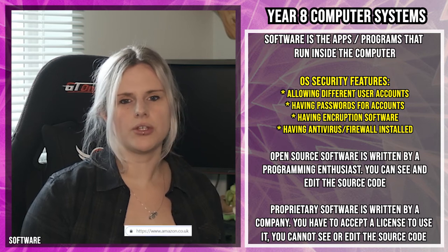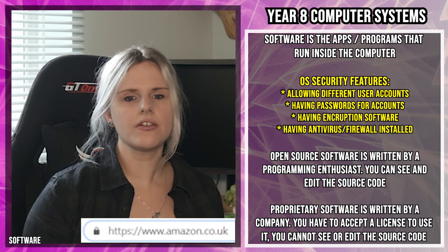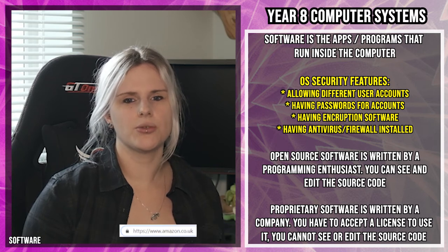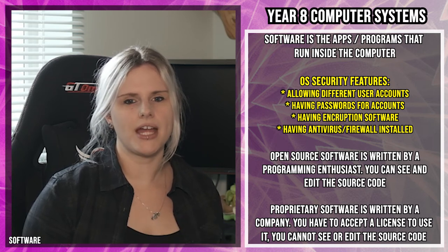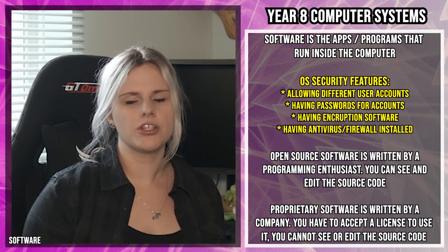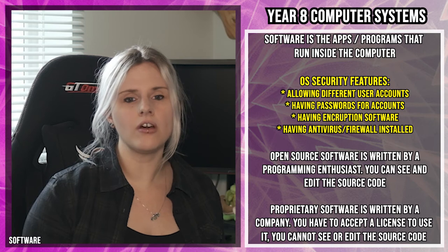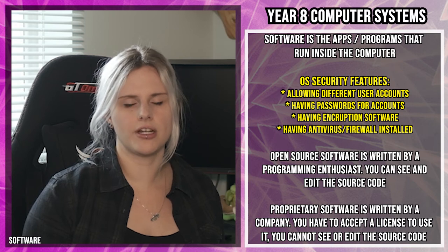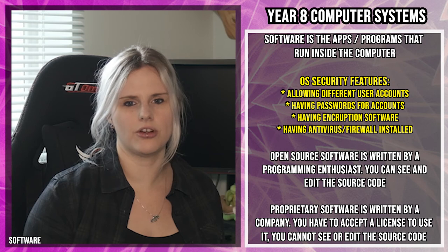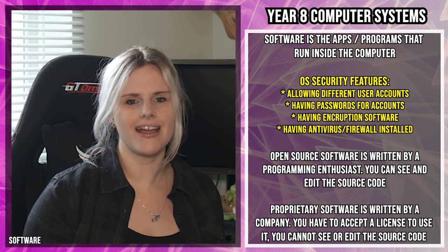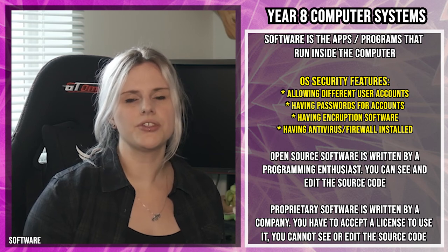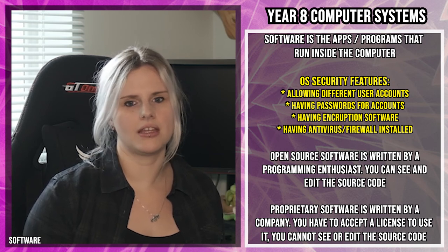Operating systems also have encryption software installed. Encryption means turning your data into a code that people can't read without a special key. For example, you type in your credit card details, the encryption software turns them into a secret code, and the online shop has the key to unlock it. Anyone trying to hack the system will see the code but not have the key, helping to keep data secure.